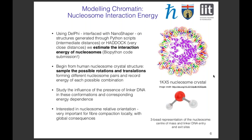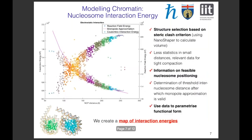We are interested in nucleosome relative orientation and not just different distances between nucleosomes, because different orientations are very important for fiber compaction locally and have global consequences due to different fiber folding patterns in chromatin. We chose structures based on the steric clash criterion, using Nanoshaper to calculate volumes and discard nucleosome pairs that presented steric clashes. This led to less statistics at small distances, which we compensated using HADDOCK docked poses. This data is relevant for tight compaction situations as it tells us which nucleosome positioning configurations are feasible in the chromatin fiber.